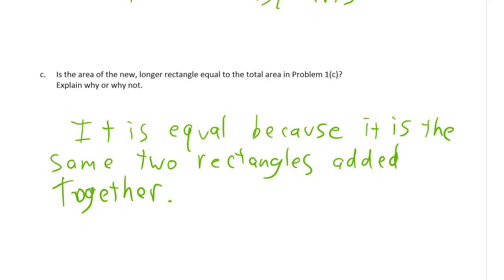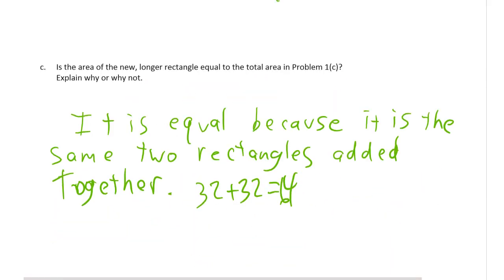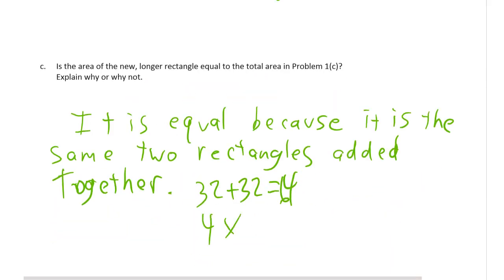And then we could also write that. In the first one I had 32 plus 32 equals 64, and the other one I had 4 times 16. Let me just fix the 64 here, make it a little more readable. Square units. And this is enough.